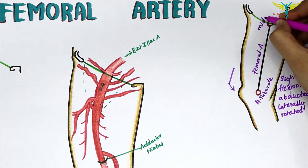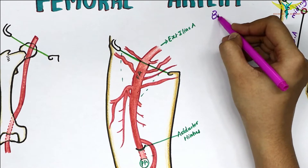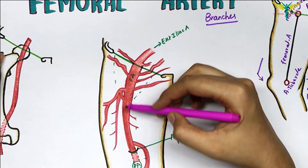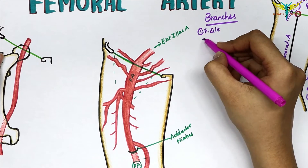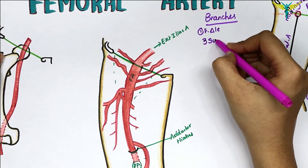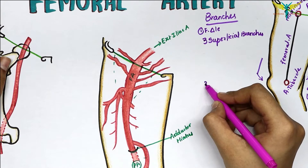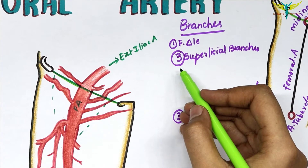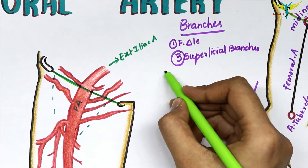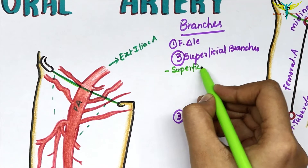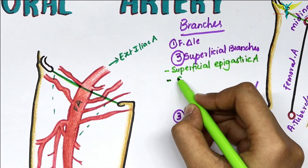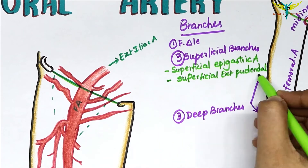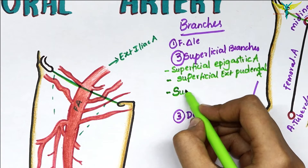The branches of the femoral artery in the femoral triangle include three superficial branches and three deep branches. The three superficial branches are the superficial epigastric artery, the superficial external pudendal artery, and the superficial circumflex iliac artery.